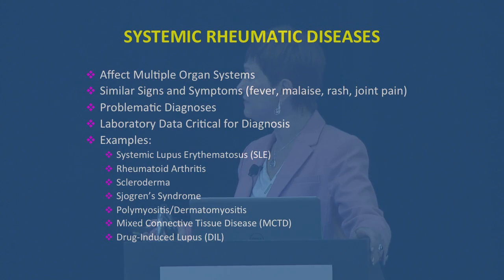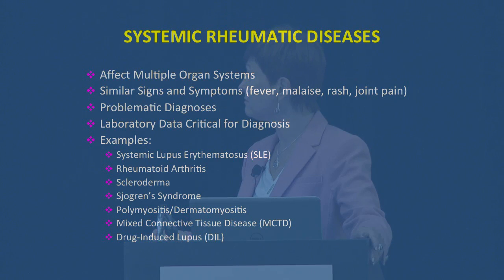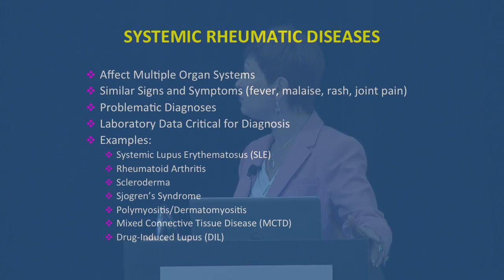Some examples of these diseases — SLE, rheumatoid arthritis, scleroderma, Sjogren's, polymyositis or dermatomyositis, mixed connective tissue disease, which is really one of the ones that mimics the others very much, and even drug-induced lupus.